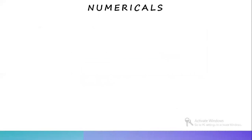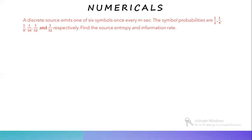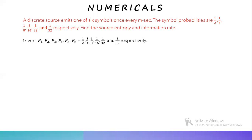Next we'll be seeing numericals on this. The first problem: a discrete source emits one of six symbols once every millisecond. The symbol probabilities are 1/2, 1/4, 1/8, 1/16, 1/32, and 1/32 respectively. You need to find the source entropy and information rate. The given values are p1, p2, p3, p4, p5, and p6.